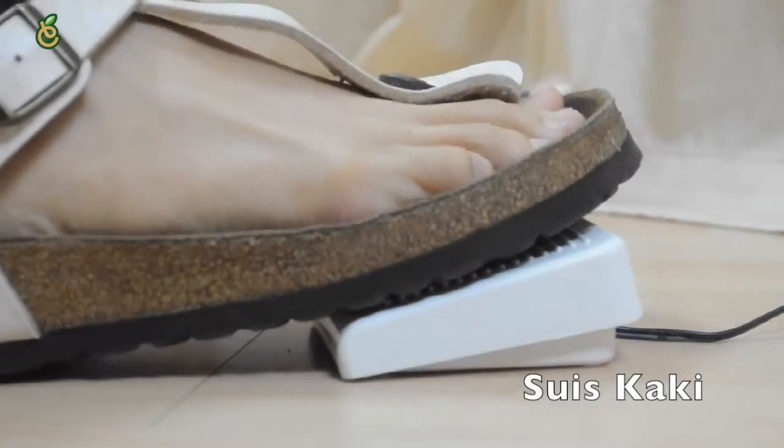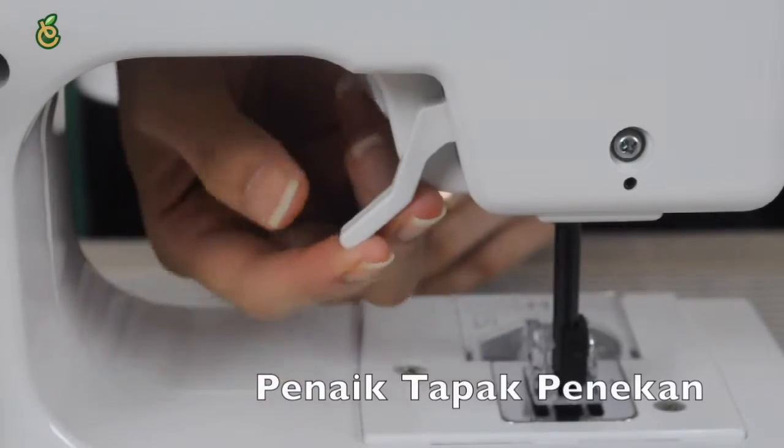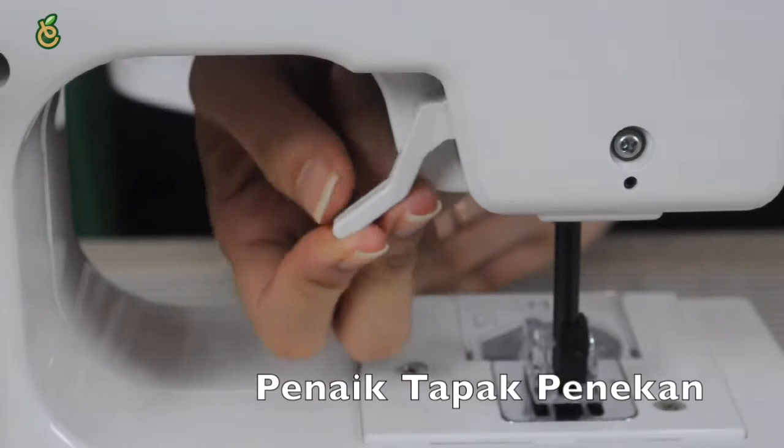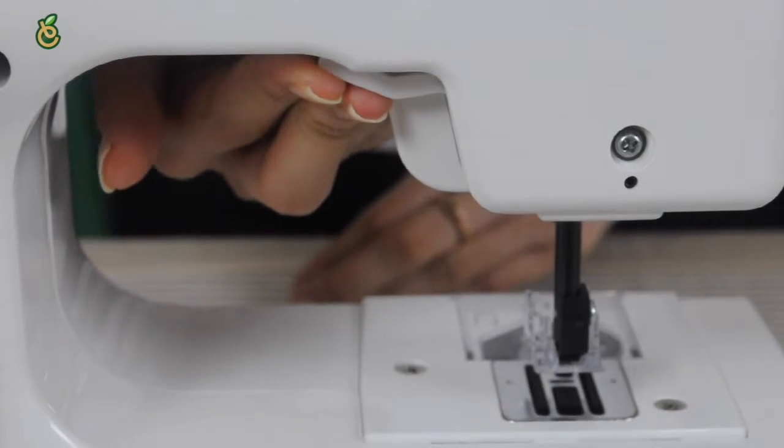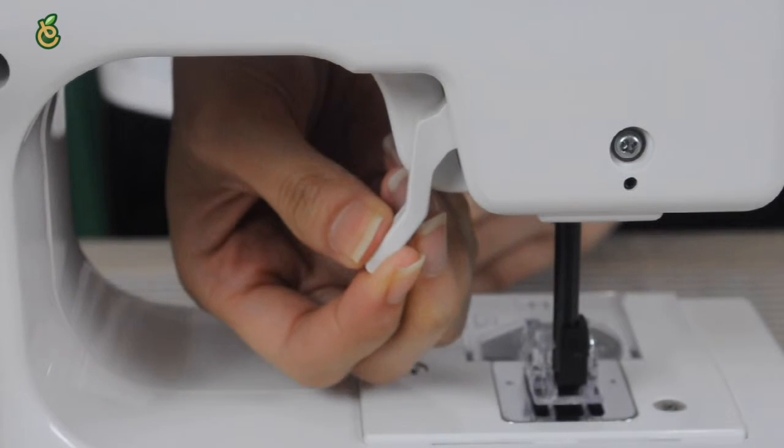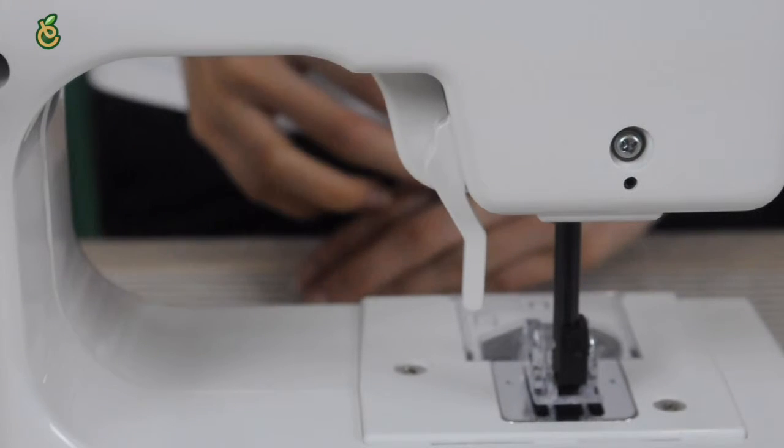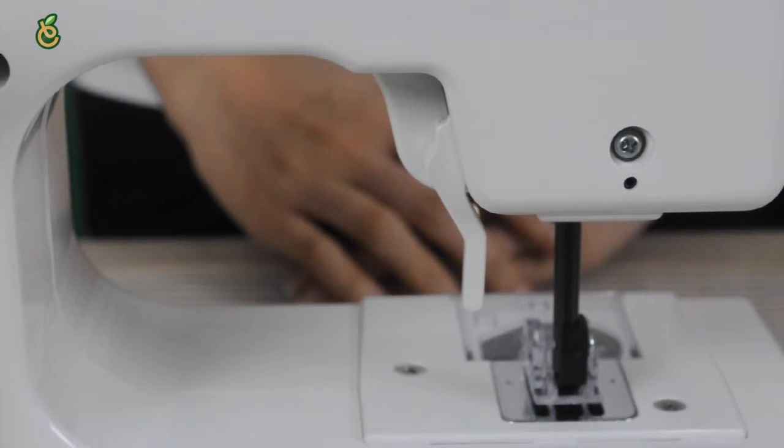Step on the foot switch to start sewing. The presser foot lifter rises and lowers the presser foot. You can raise it higher than the normal up position to more easily place fabric under the foot. Remember to lower the presser foot onto the fabric before starting to sew.